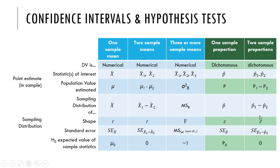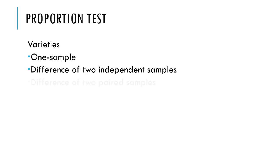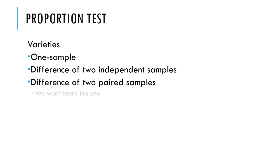If there are two proportions, everything gets carried out in the two-proportion sense — this is like a two-sample means test except it's a two-sample proportion test. In this lecture we're going to talk about a test for one proportion from a single sample. There are also a difference between two independent samples and a difference between two paired samples — we're not going to do the paired version in this class, but it's out there and not that hard to find.